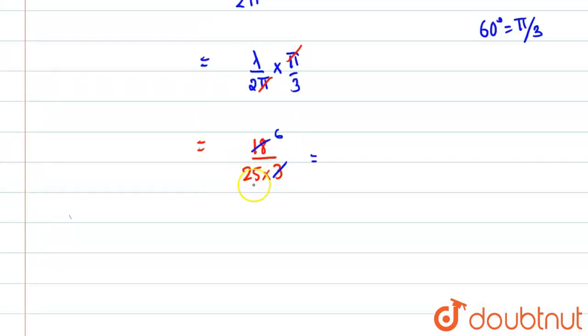And we also missed one 2 over here, so we'll multiply by 2. So this 2 will also cancel this 6.